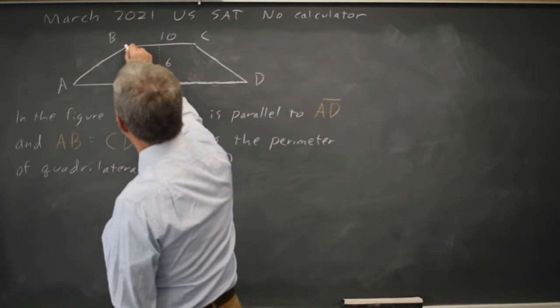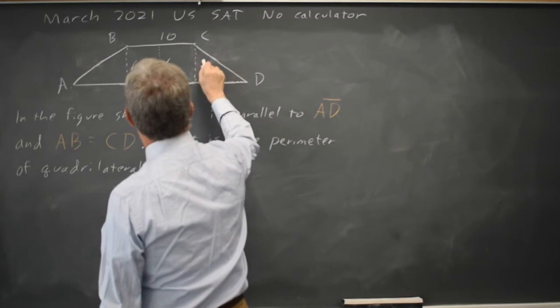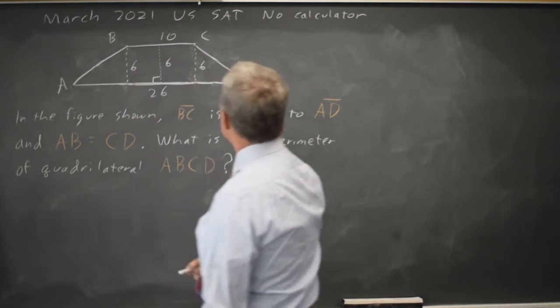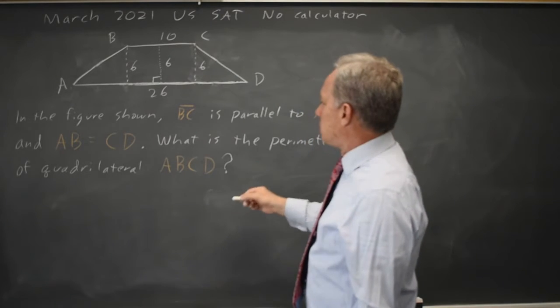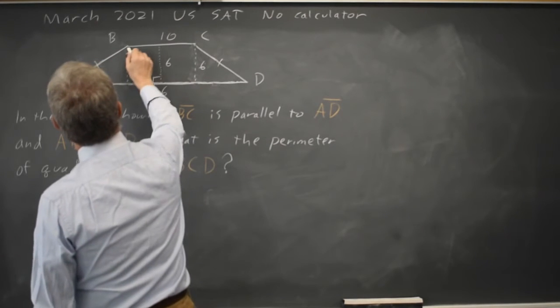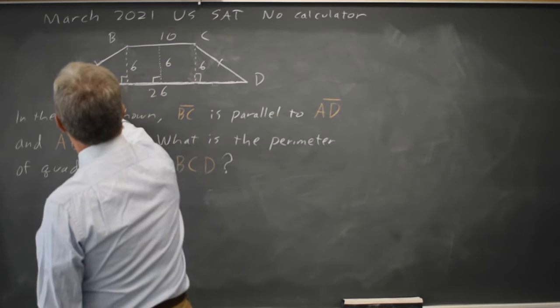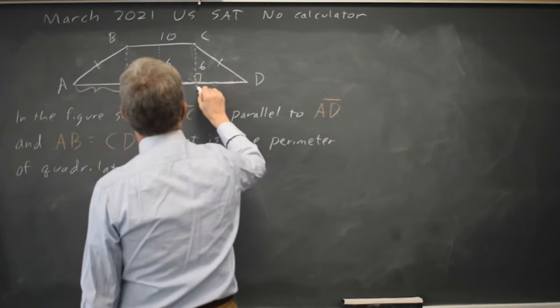Since the height is 6 here, the height is also 6 over here, and the height is 6 over here. We're also told that AB equals CD, so this length equals this length, and the heights are equal, and these are right triangles, so this distance equals this distance.